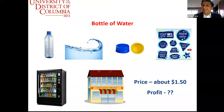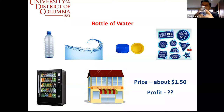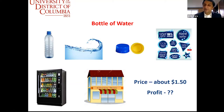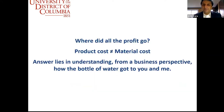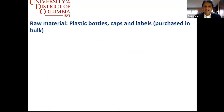The profit margins on commodity products are really low because of high cost pressures. The answer lies in understanding how the bottle of water got to the customer. It's very important to understand that the product cost is not equal to the material cost. Let's look at the whole supply chain of making a water bottle and how it gets to you and me. First, we have the raw materials — plastic bottles, caps, and labels — all purchased in bulk from suppliers.